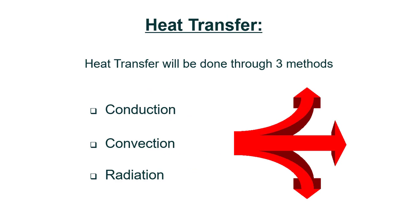Heat transfer. There are three important types of heat transfer: conduction, convection, and radiation. How does conduction work? If you take a rod and put it into a flame, the heat starts to transfer from the flame to your hand through molecular conduction. Each molecule will transfer the heat, so the heat transfers from the flame toward your hand. This is called conduction.